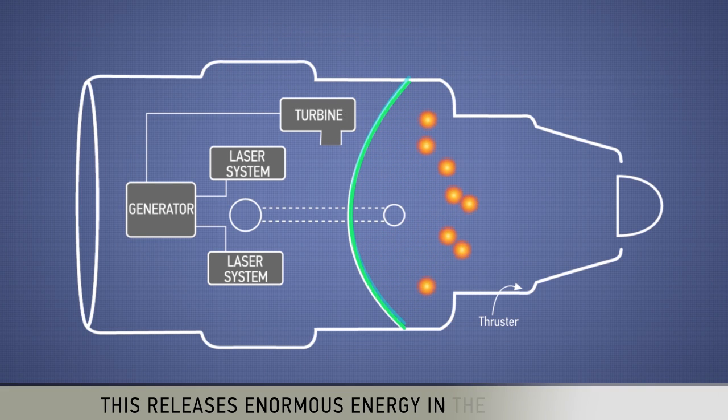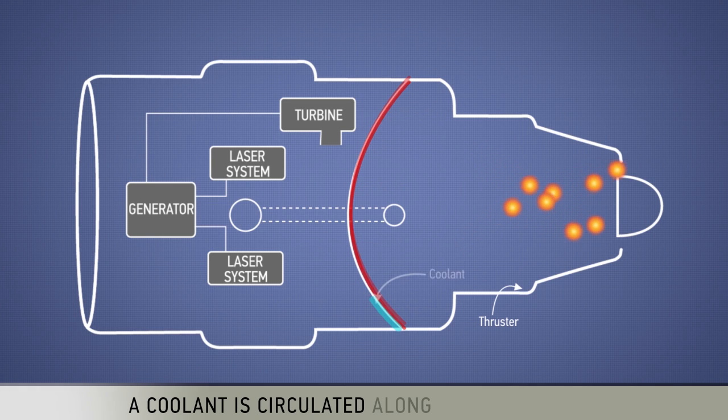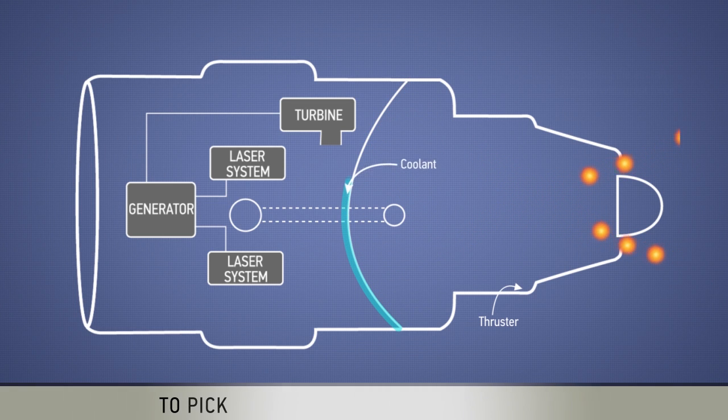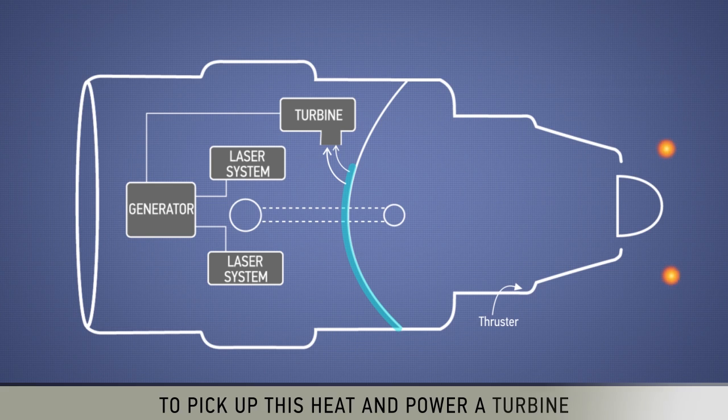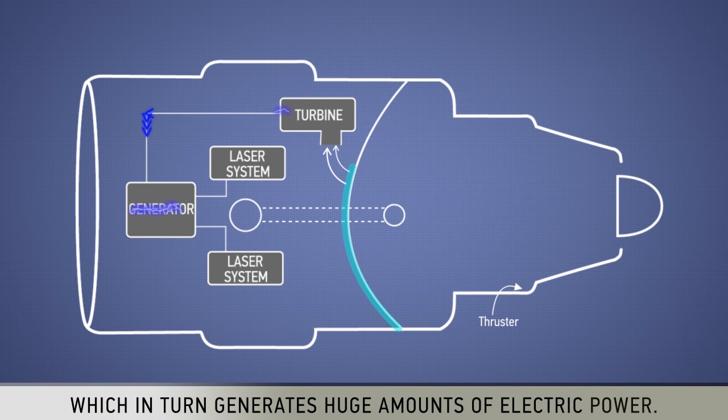This releases enormous energy in the form of heat. A coolant is circulated along the inner walls to pick up this heat and power a turbine which in turn generates huge amounts of electric power.